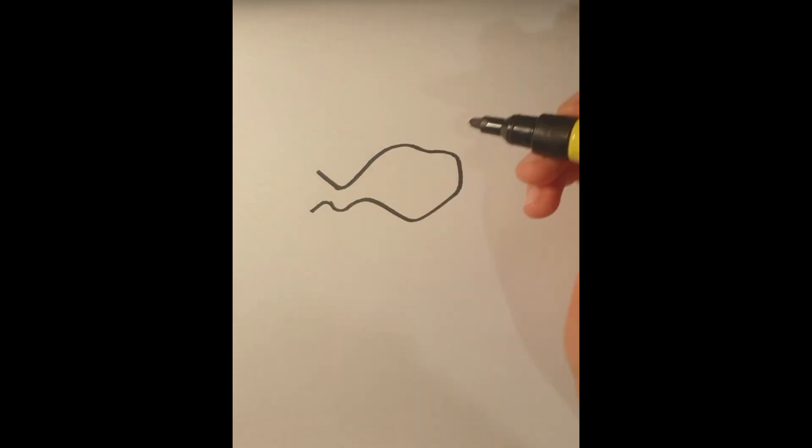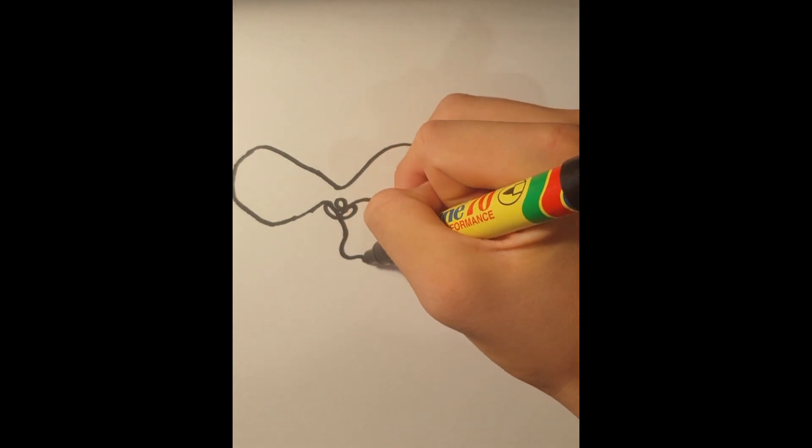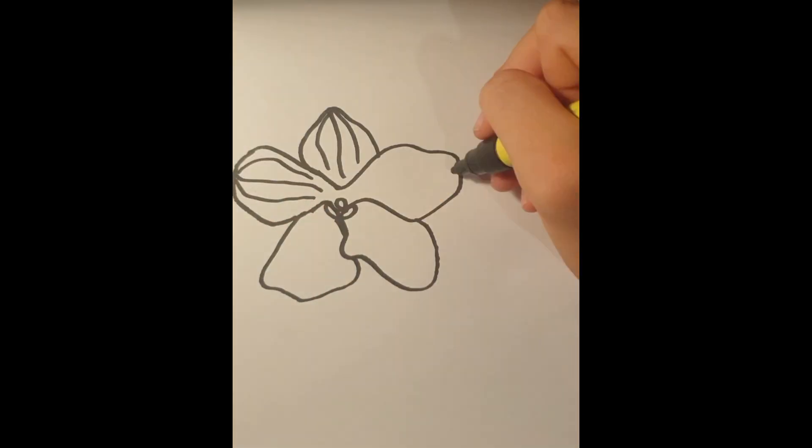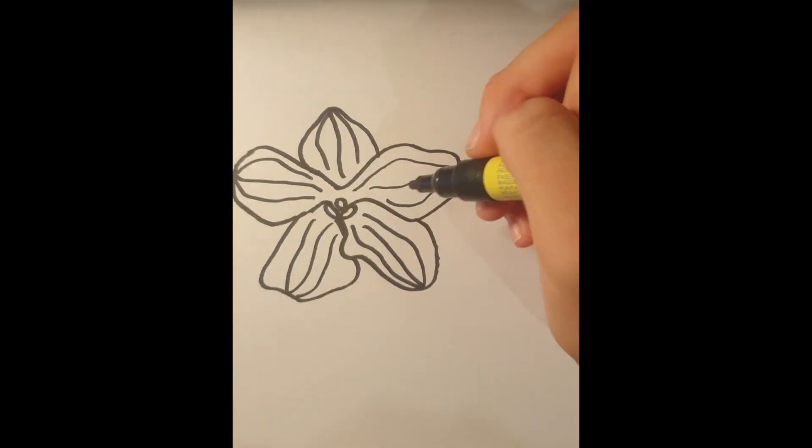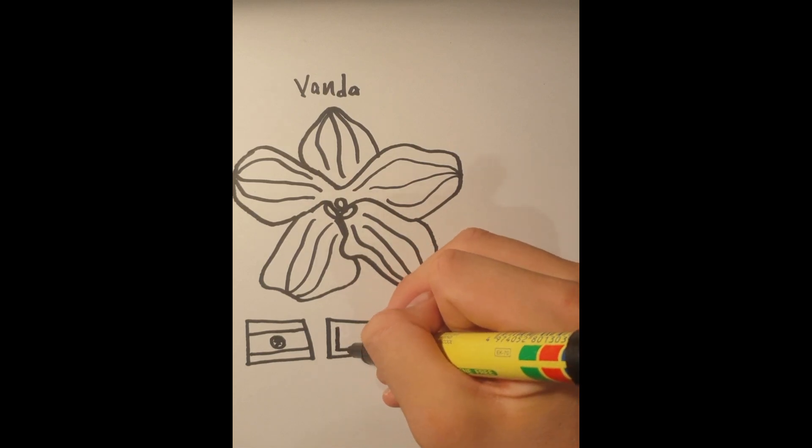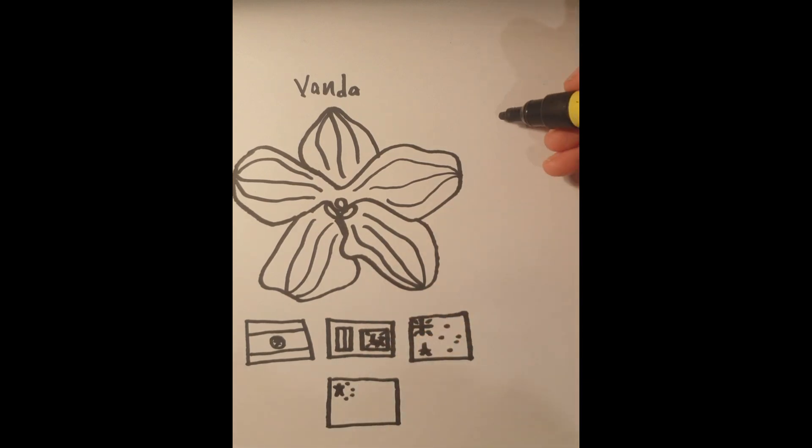Orchids also have many important uses in medicine all over the world. For example, the Vanda orchid, which grows in India, Sri Lanka, northern Australia, and southern China, is used as a curative to rheumatism. The Chinese are the oldest nation in the world to use orchids medicinally, and they continue to use orchids for medical purposes today, most commonly in the form of medicinal tea.